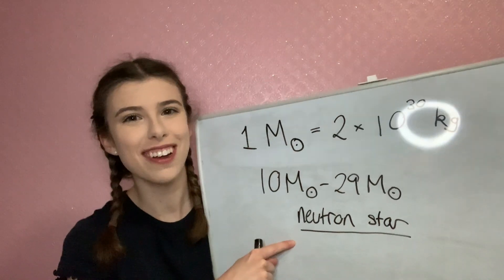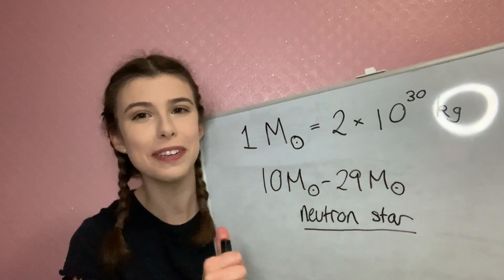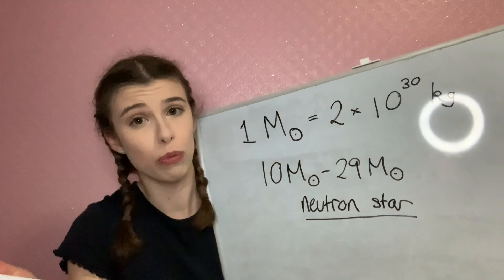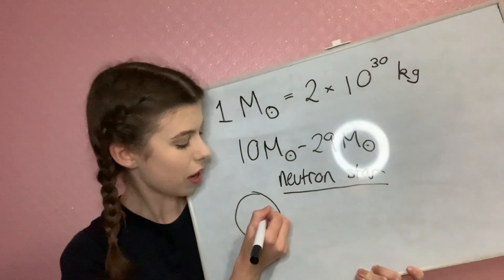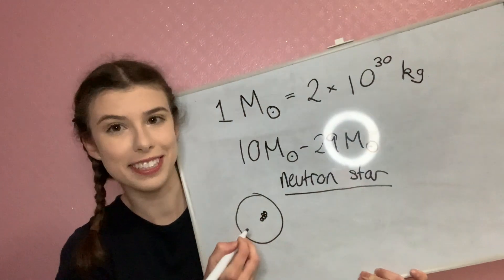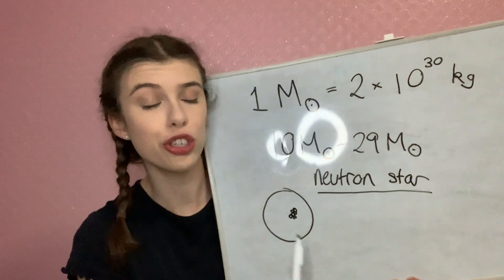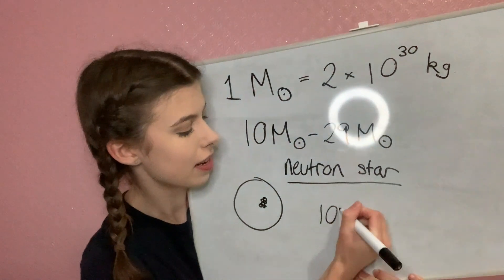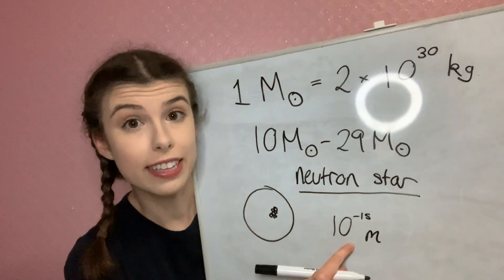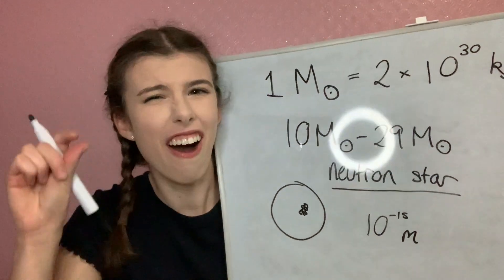Neutron stars are very, very dense bodies composed almost entirely of neutrons, as the name would suggest. These neutrons are packed very, very close together. The typical spacing between each neutron is about 10 to the minus 15 meters, which is approximately the size of an atomic nucleus — tiny.